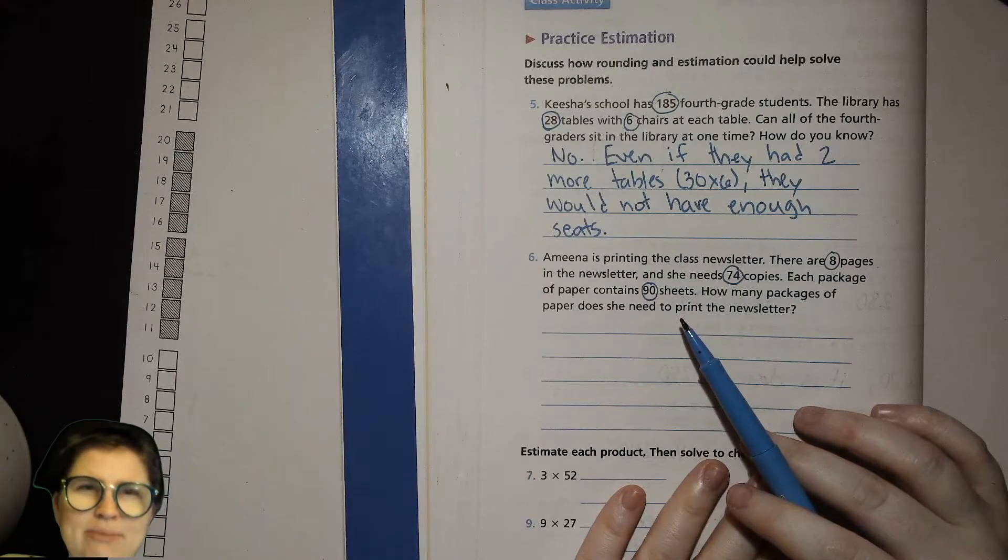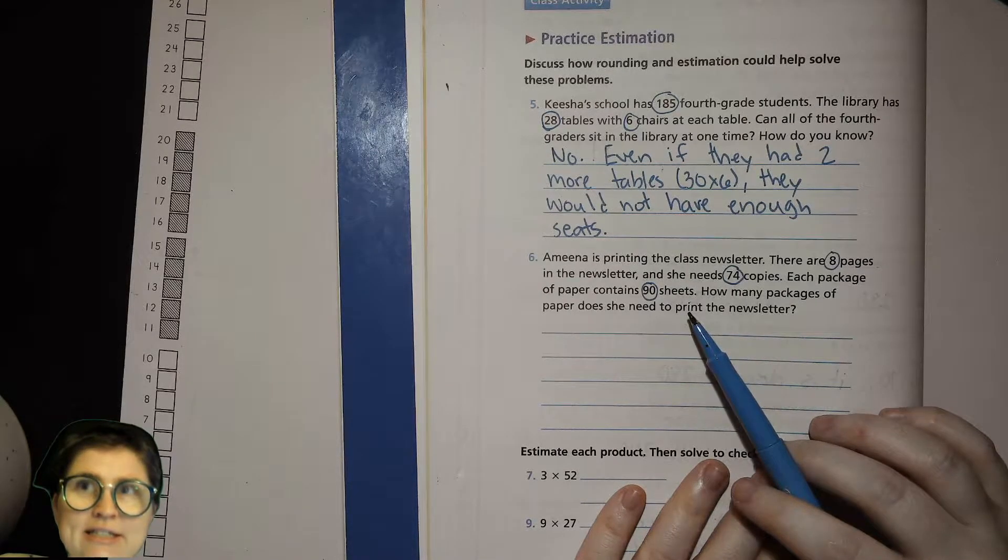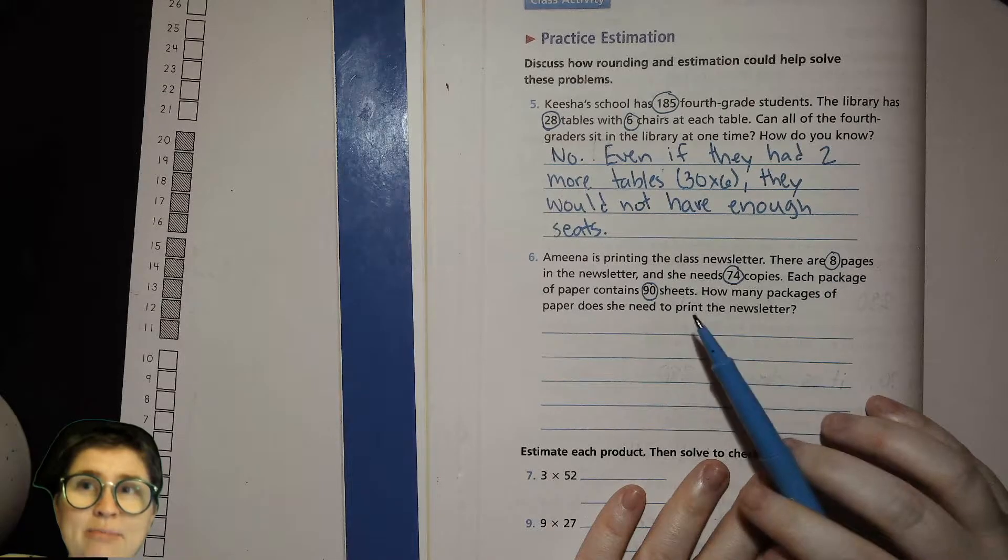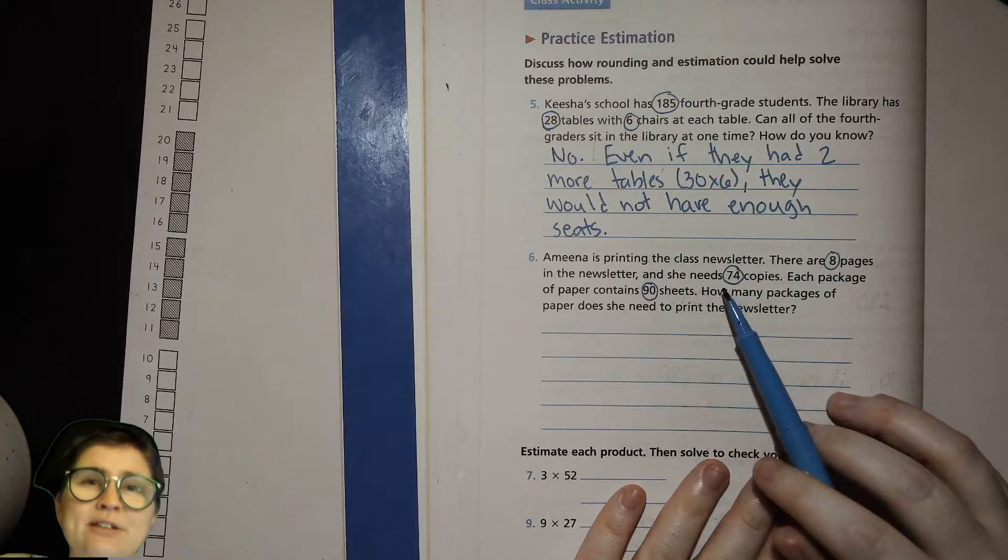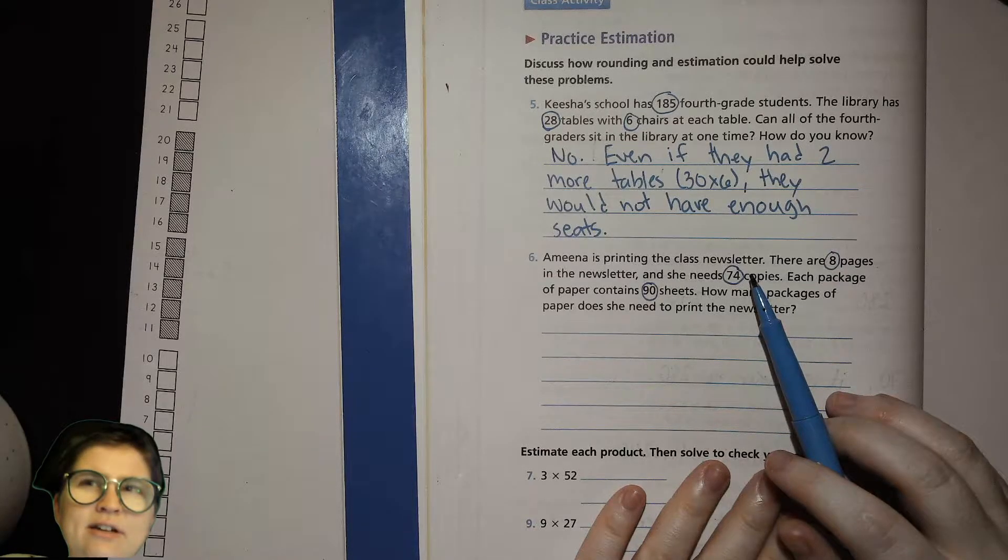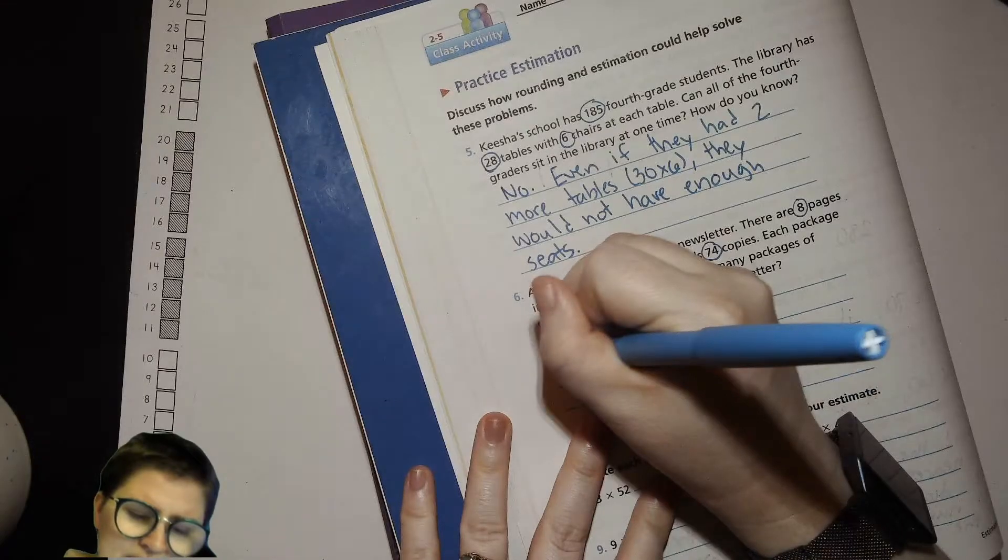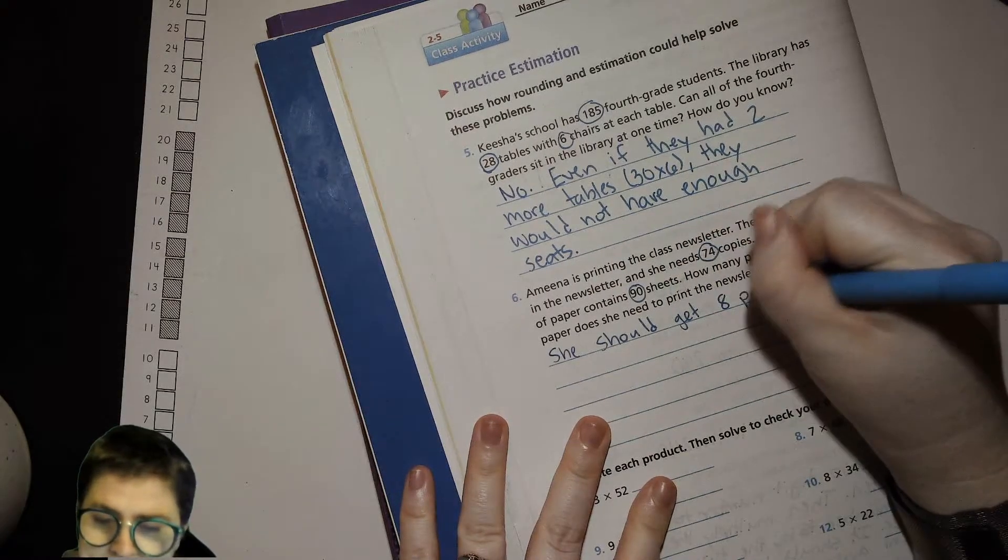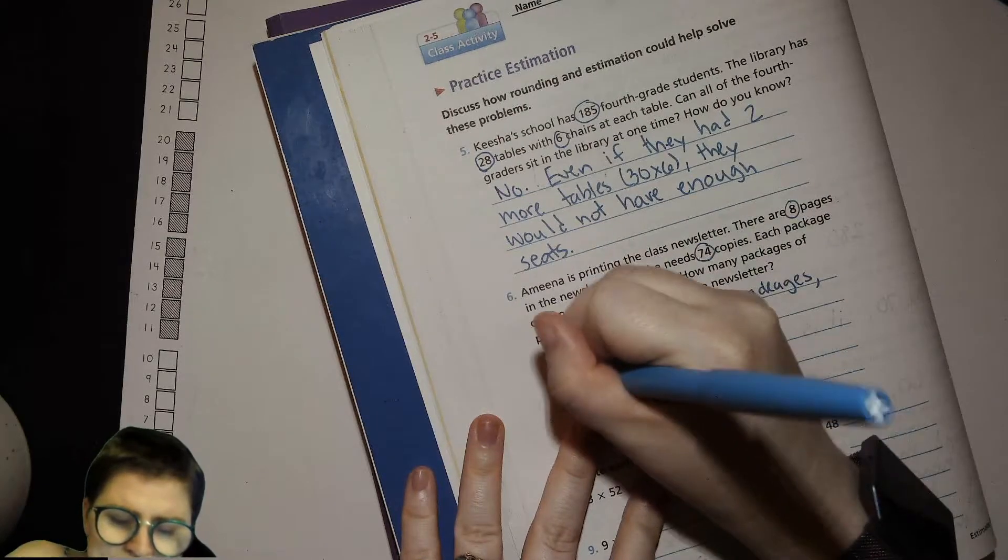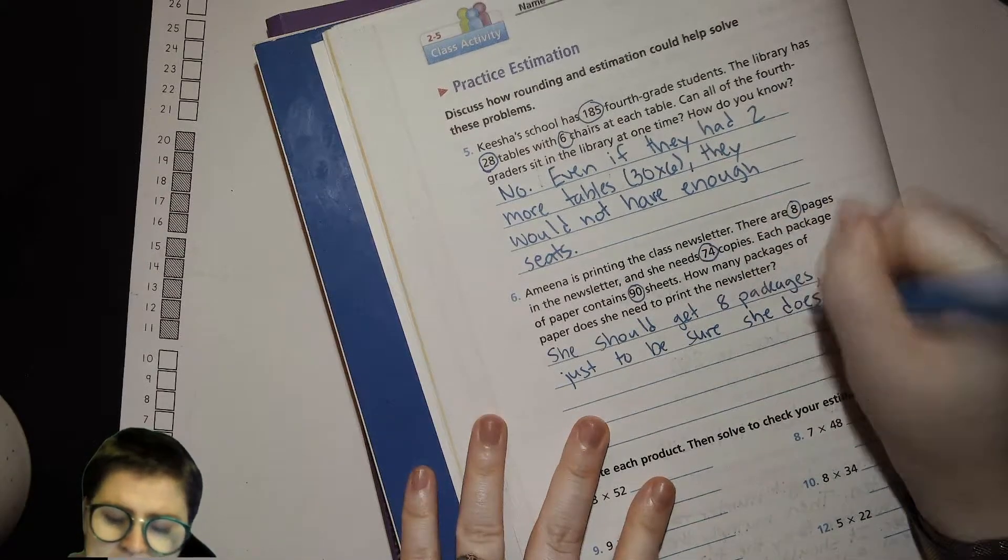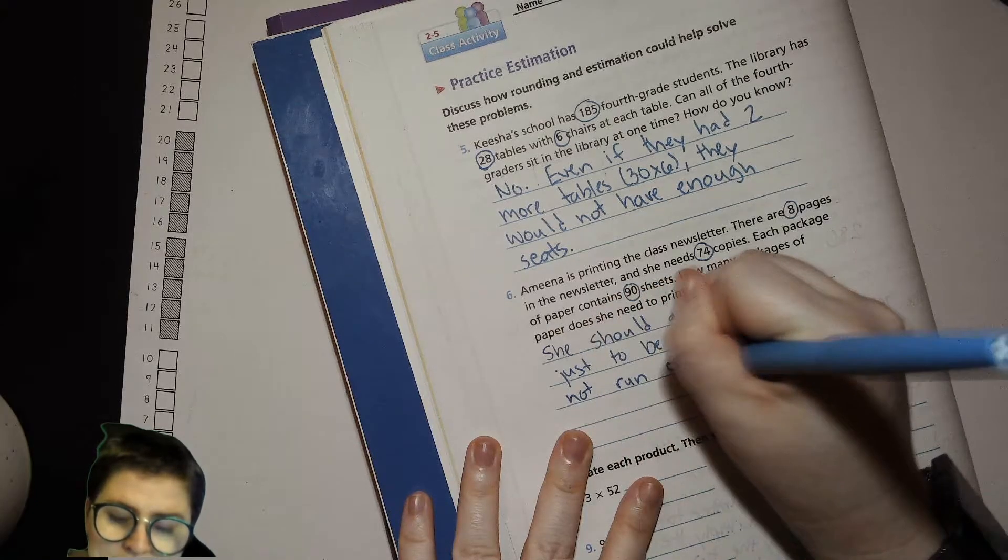In eight packages, 720. So 630 might be enough, but you'd be better off having eight packages. So we should get eight packages just to be sure she does not run out. Okay.